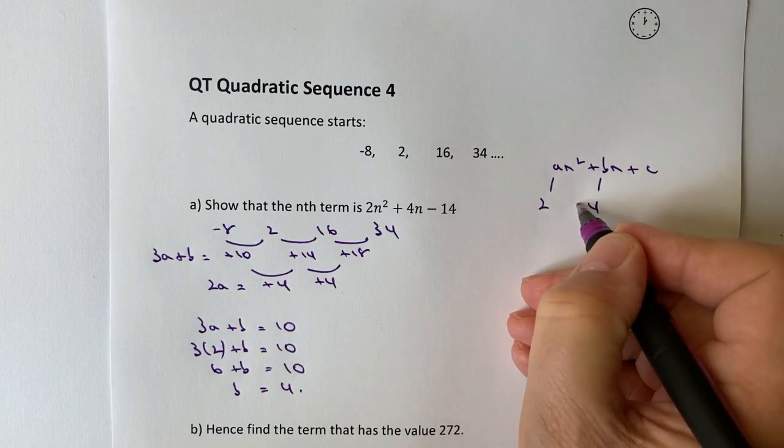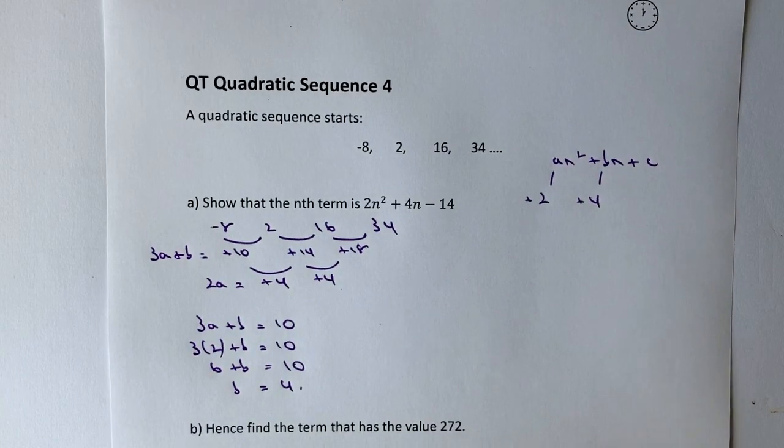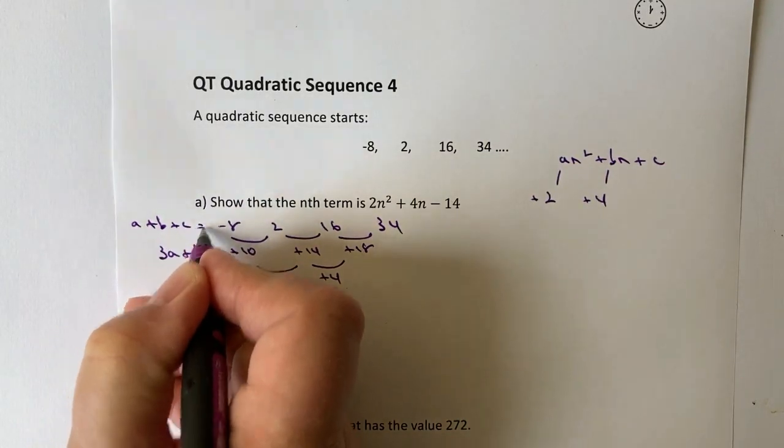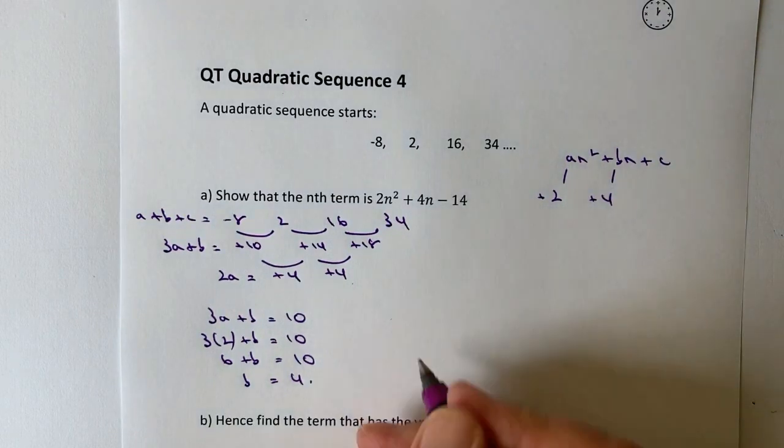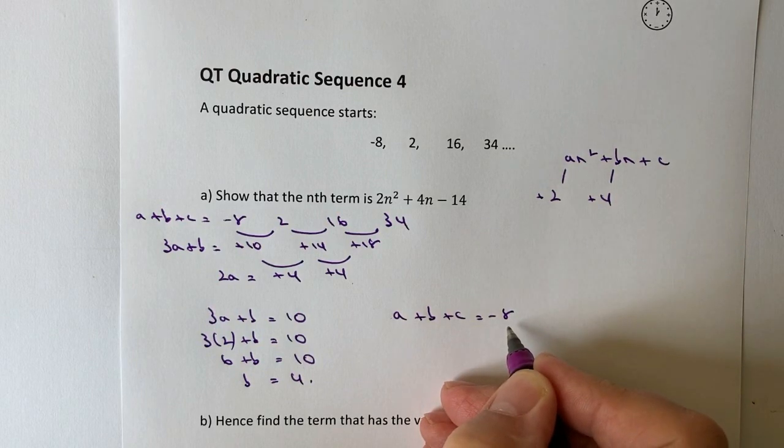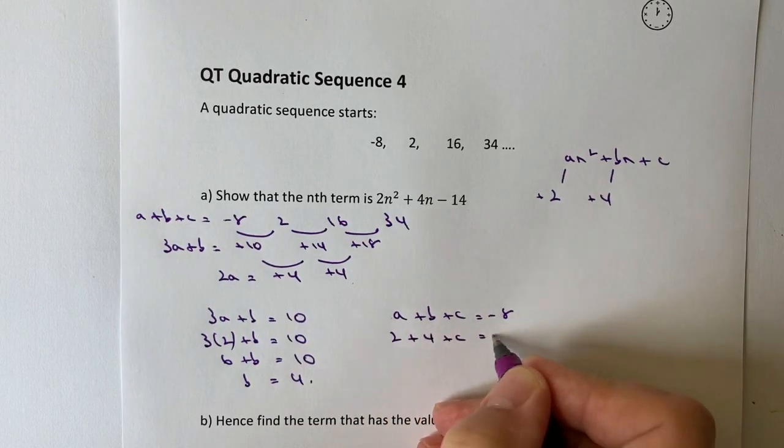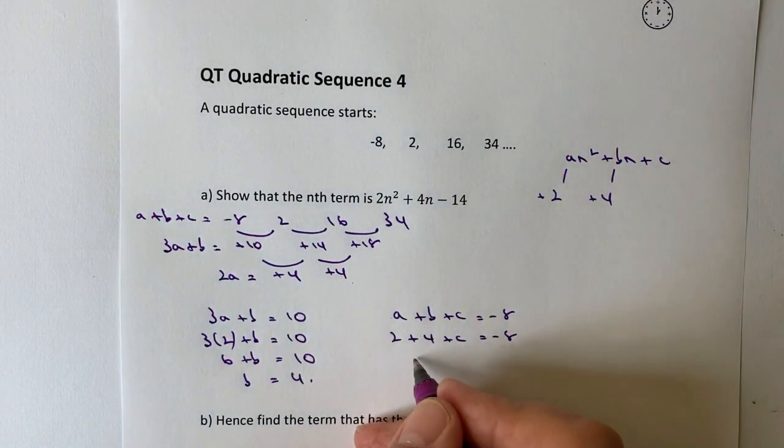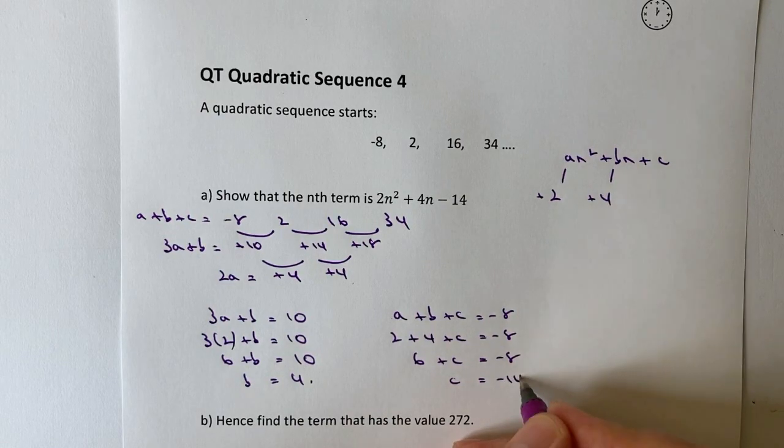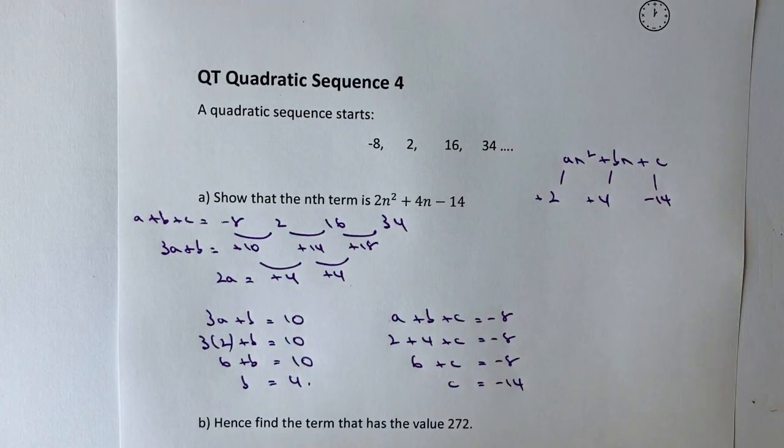So my second value is positive 4. My final formula I need to remember is this first number here, and that's a plus b plus c equals minus 8. So I'm going to write a plus b plus c equals minus 8. Well, I know my value of a is going to be 2. I know my value of b is going to be 4 plus c equals minus 8. So I've got 6 plus c equals minus 8. If I take 6 from both sides, it means c is going to be minus 14.